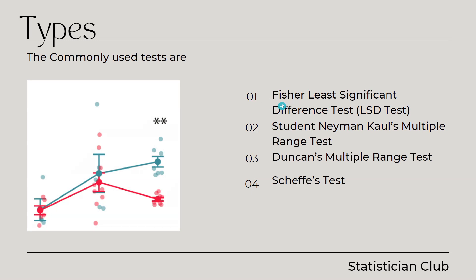The first test is Fisher's Least Significant Difference test, also abbreviated as the LSD test. Second is the Student-Newman-Keuls multiple range test. Third is Duncan's multiple range test. Fourth is Scheffé's test. In my upcoming videos, we will discuss all these tests in detail.